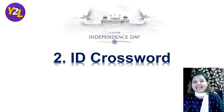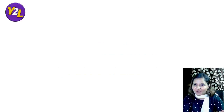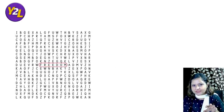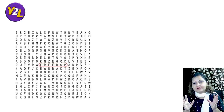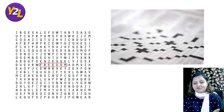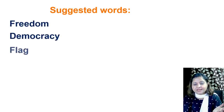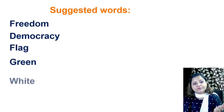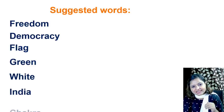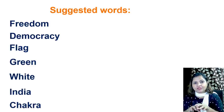The second activity is ID Crossword — an Independence Day-themed crossword. Give students a crossword and provide words they need to find, or give them hints to fill the puzzle. Suggested words include: freedom, democracy, flag, green, orange, white, India, and chakra. Students have to find these words from the grid.